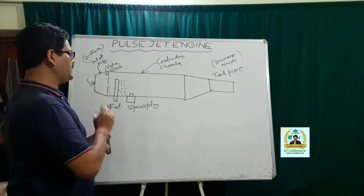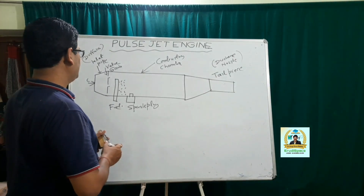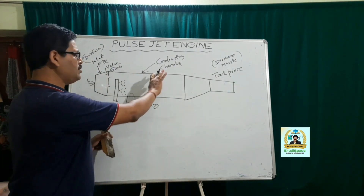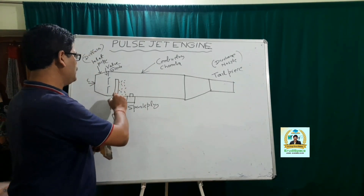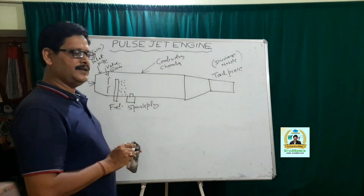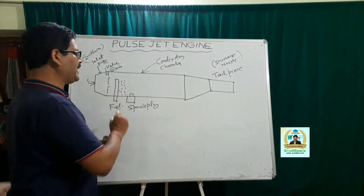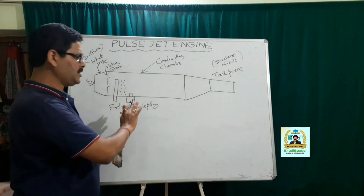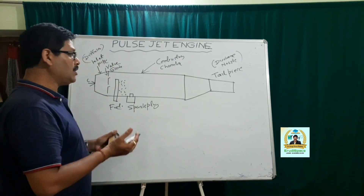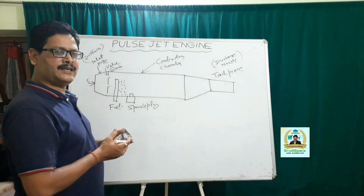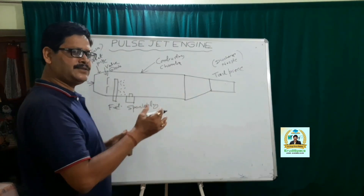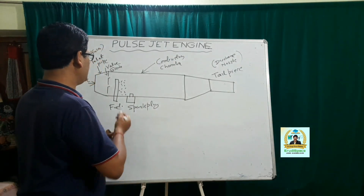This operation is what we call ram compression. As the pressure rises, it actually opens the clapper valve grid and allows air to enter into the combustion chamber. In the combustion chamber, fuel is supplied on a continuous basis and there is a spark plug. When the spark is given, the air-fuel mixture undergoes combustion, causing an increase in pressure and temperature, and a huge amount of thermal energy is developed.